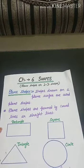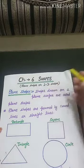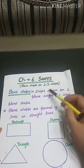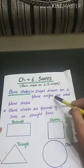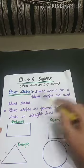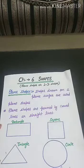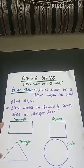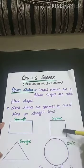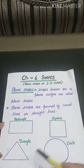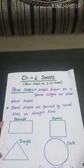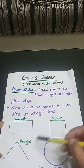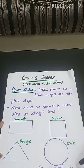First we will discuss about plane shapes — what are plane shapes? Shapes drawn on a plane surface are called plane shapes. For example, some shapes I have drawn here: rectangle, square, triangle and circle. This is a plane paper, a plane surface. So whatever shapes we draw on a plane surface or plane paper are called plane shapes.